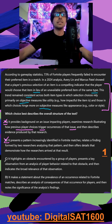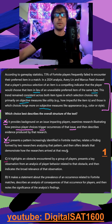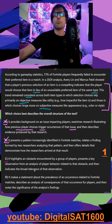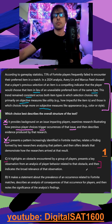In C, it highlights an obstacle encountered by a group of players, presents a key observation from an analysis of player behavior related to the obstacle, and then indicates the broad relevance of that observation. That third line seems to be the tricky part — with B it was the third line, and with C it's going to be the third line here.